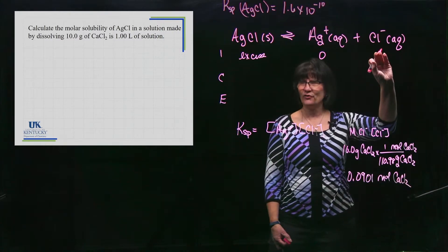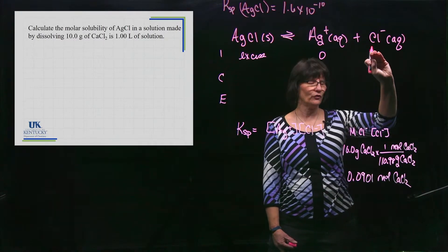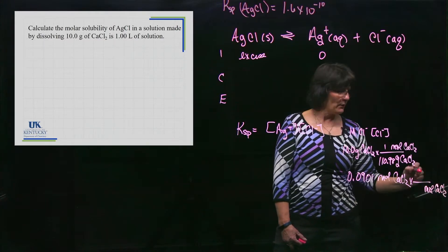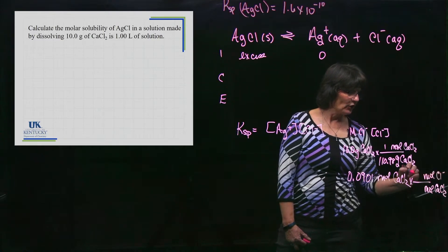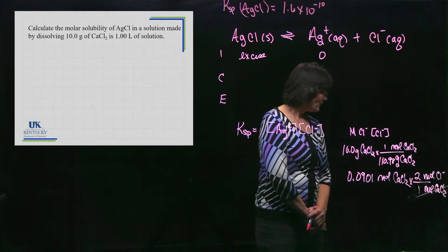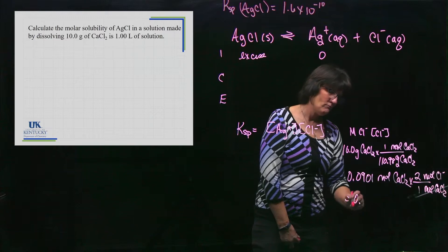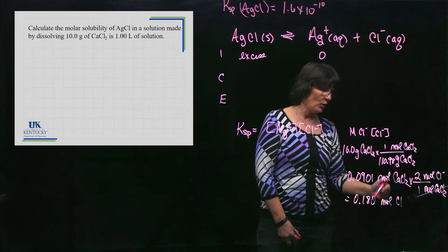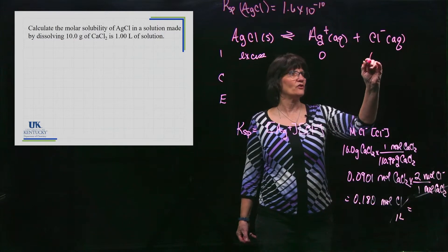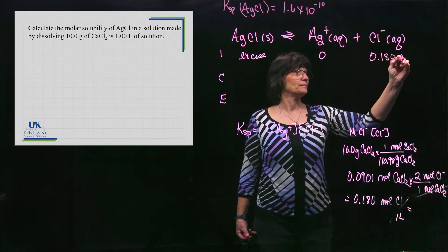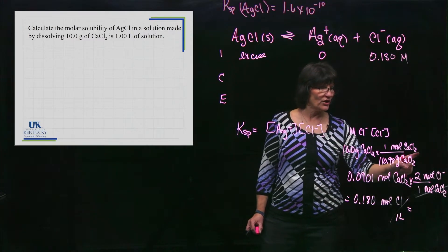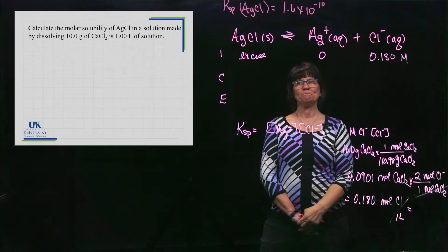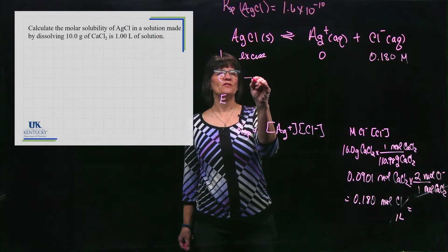But I don't want moles of calcium chloride — I want moles of chloride. There are two chlorides in every calcium chloride, so 0.0901 × 2 = 0.180 moles of Cl⁻. There was one liter, so the concentration of Cl⁻ is 0.18 M. That two subscript becomes a doubling of the concentration. Now I know how much chloride is present before any silver chloride dissolves, so I put 0.18 in the initial line for Cl⁻.